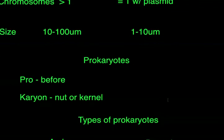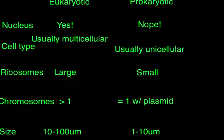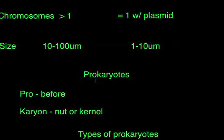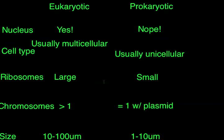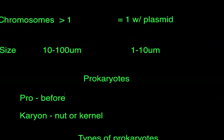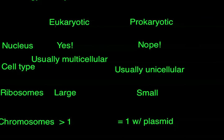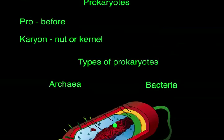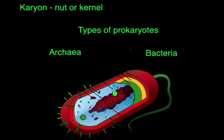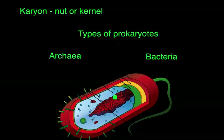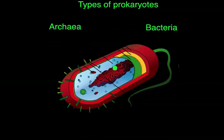Let's talk about the Greek roots of prokaryotic, since it's the simpler one. Pro means before, and karyon means nut or kernel — which directly refers to the nucleus. So prokaryotic literally means before the nucleus, which makes sense because it doesn't have one, and it's evolutionarily before the eukaryotic. There are a couple different types of prokaryotic cells. One is archaea — the ancient prokaryote, a precursor to bacteria that would have evolved later.